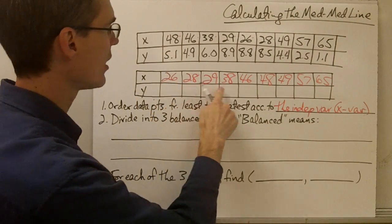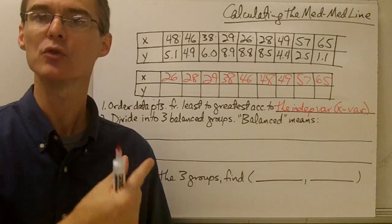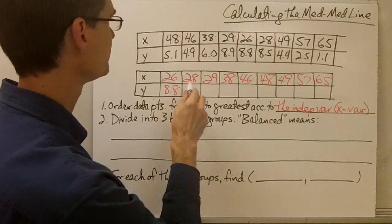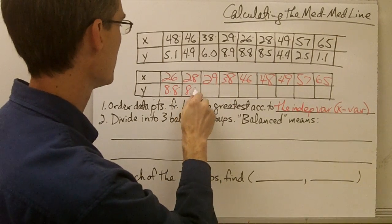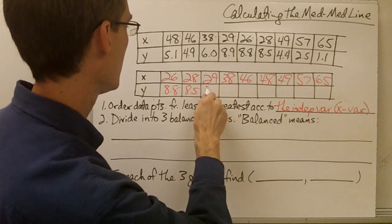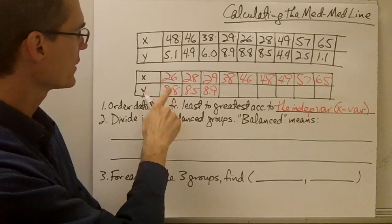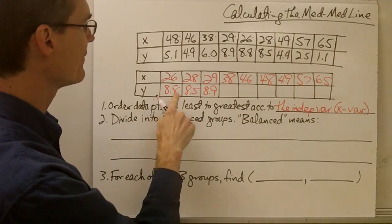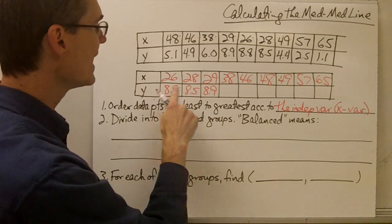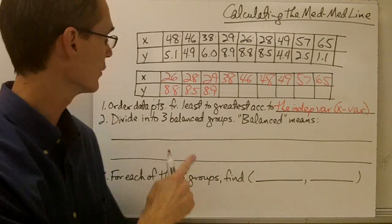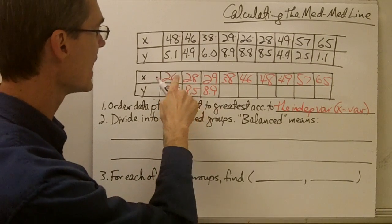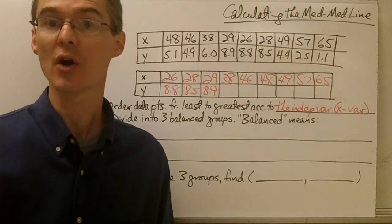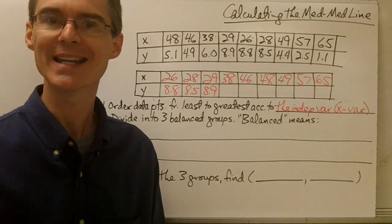Next I want to fill in all of my corresponding y values, keeping all the y values with their corresponding x values. So 26 goes with 8.8, 28 with 8.5, 29 with 8.9. Pretty quickly you notice that even though your x values are in order from least to greatest, since we're just matching up the y value with its corresponding x value, it may turn out that your y values are not in order from least to greatest. So x goes 26, 28, 29 — least to greatest — but y goes 8.8, 8.5, 8.9.